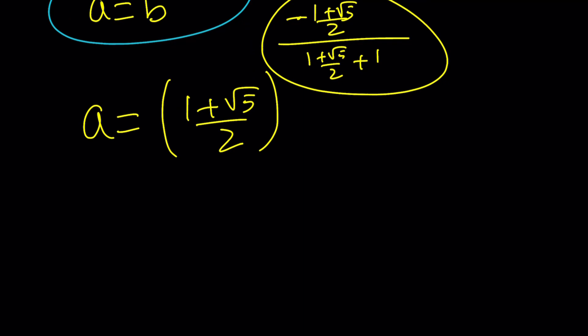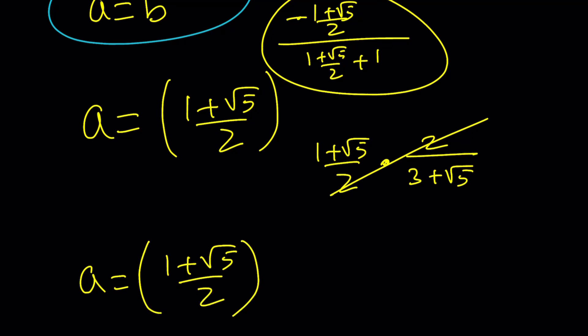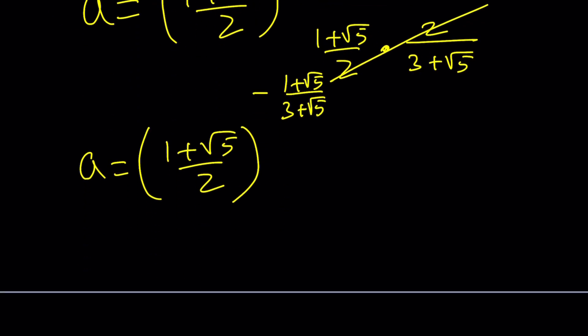Let's ignore the negative for now. I'm just going to do 1 plus root 5 over 2. And, then, multiply this by the reciprocal, which is going to give me 2 over 3 plus root 5. 2's are going to cancel out, giving us something a little better. So, a can be written as 1 plus root 5 over 2, a very irrational number. That can be written as negative 1 plus root 5 over 3 plus root 5.